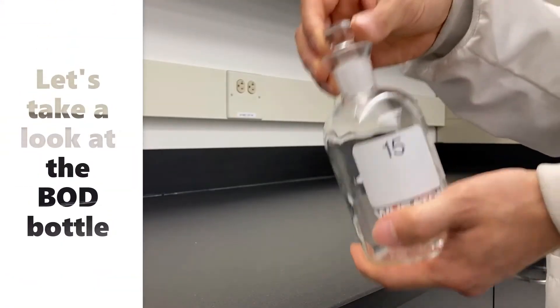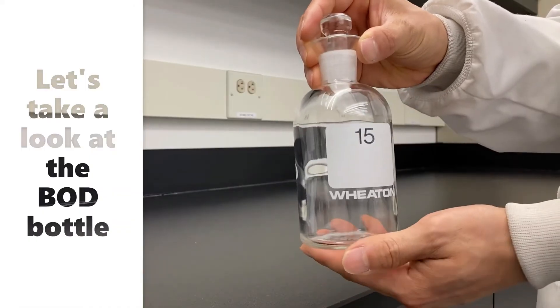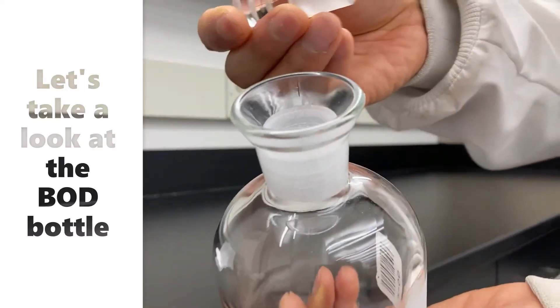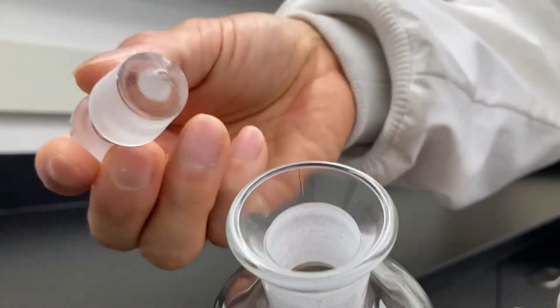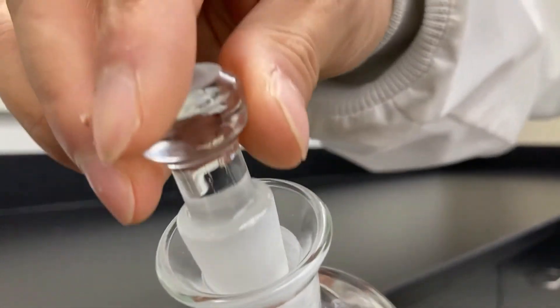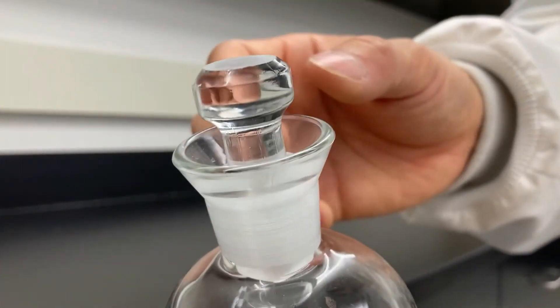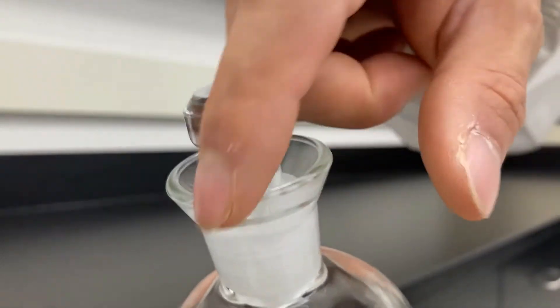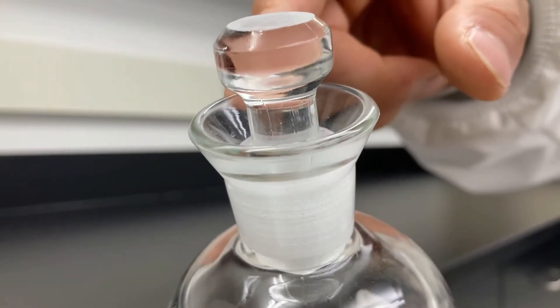So, this is a standard BOD bottle we use for the BOD test. The total volume of this bottle is 300 ml, and as you can see here, the shape of this lid is unique. This flared shape with this lid is designed for airtight seal in a traditional way because we don't want to have oxygen supplements from outside of this bottle. You can use water around here to prevent oxygen intrusion into the bottle during the test.